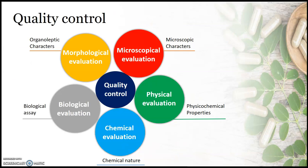To check for adulteration, there should be a procedure for quality control, also known as drug evaluation. Quality control or drug evaluation of crude drugs is the process that helps identify the crude drug and confirm its quality and purity. It includes five different evaluations: morphological, microscopical, physical, chemical, and biological evaluation.